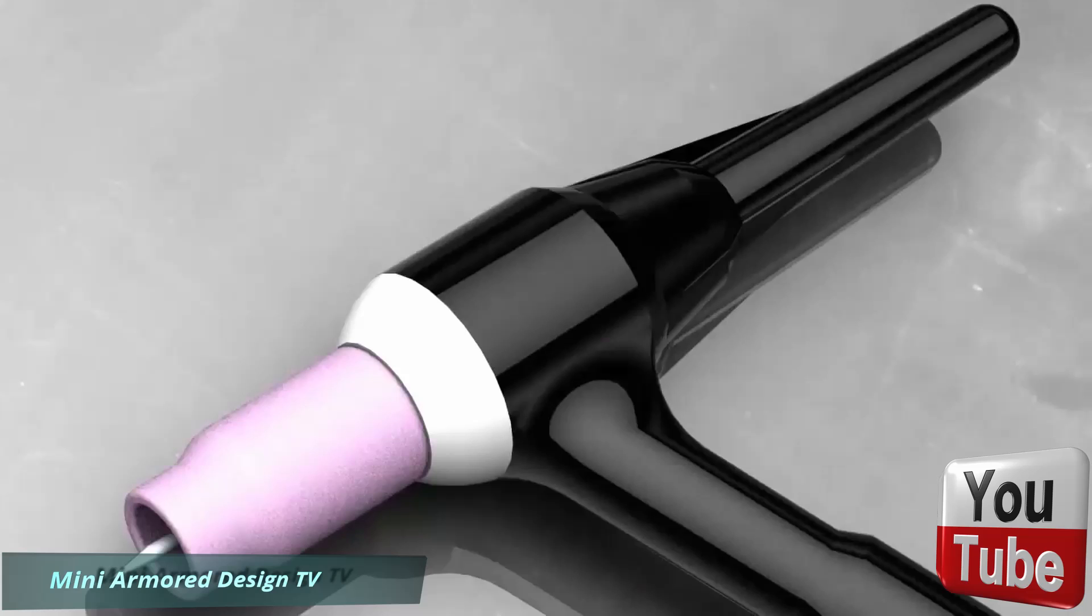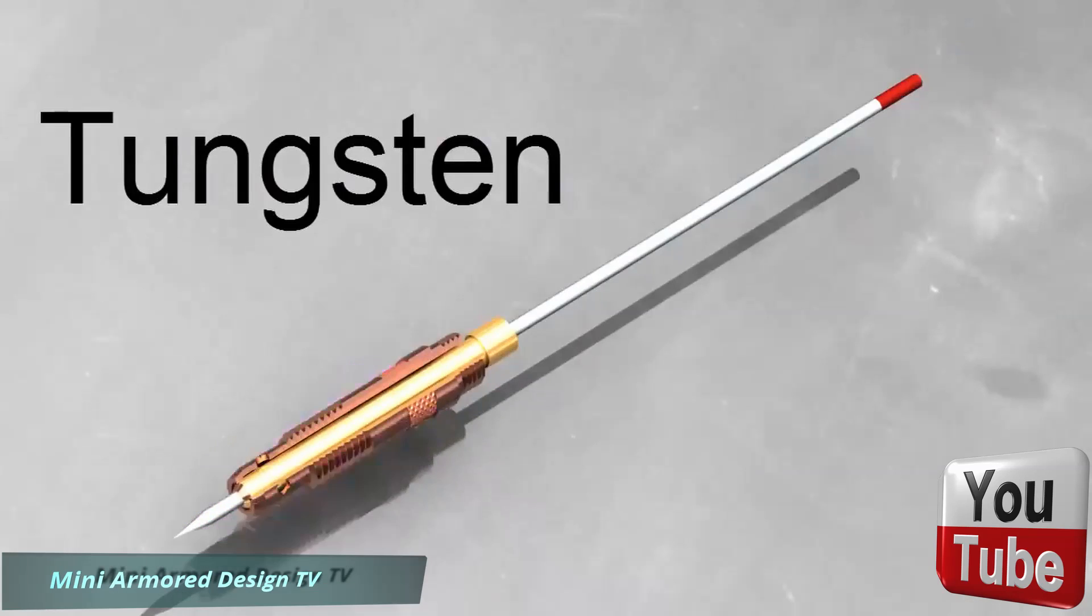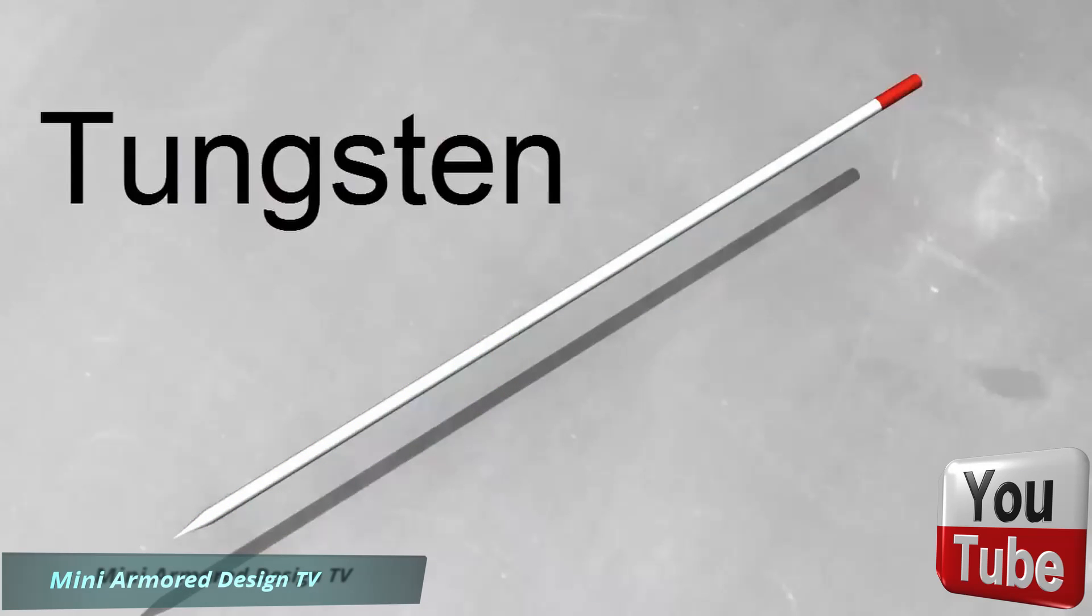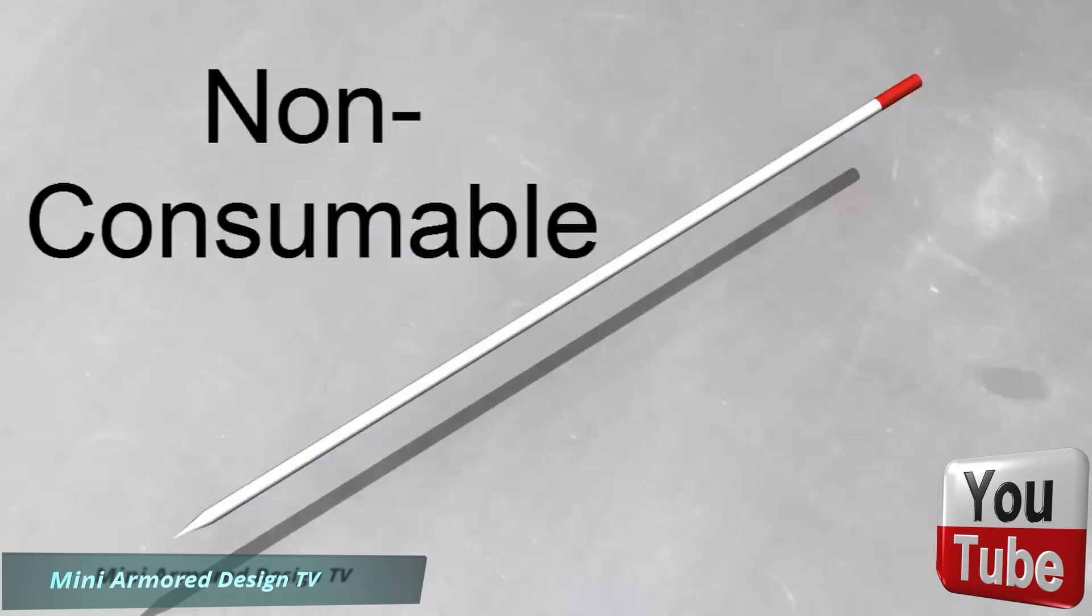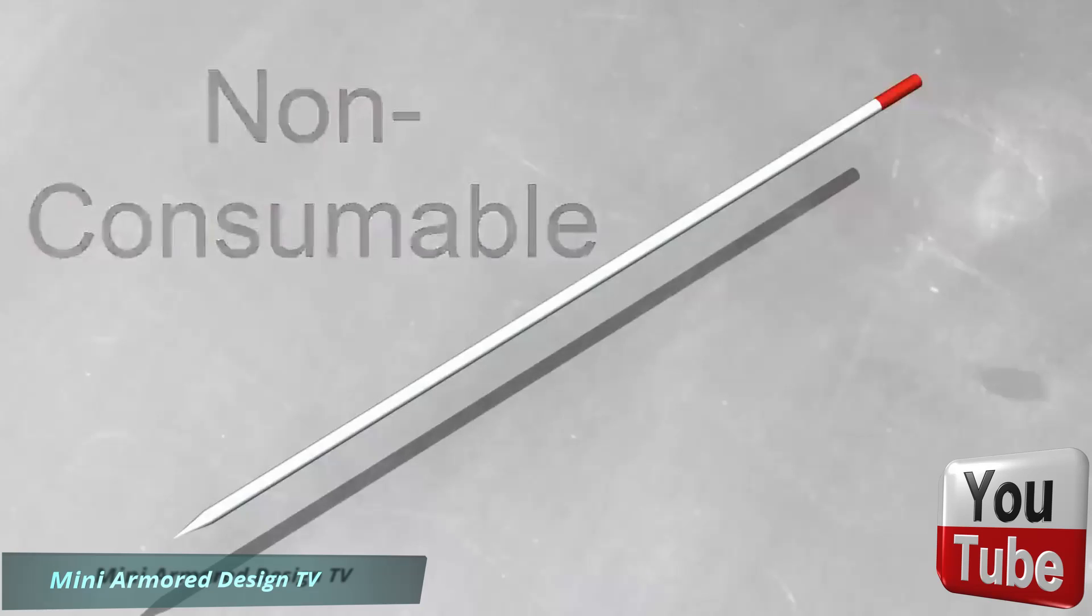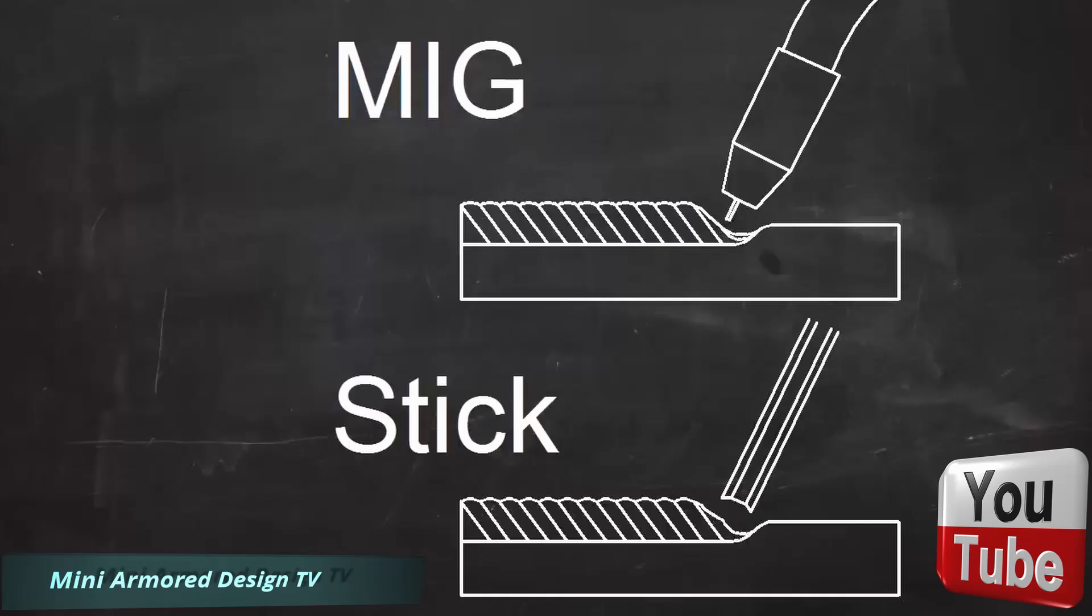TIG welding uses a tungsten electrode. Tungsten has an extremely high melting point. When you TIG weld, the electrode gets hot but it doesn't melt. We say that it's a non-consumable electrode. That doesn't mean it lasts forever, just that it doesn't melt and become part of the weld. In other welding processes, the electrode melts and becomes filler metal. Those are consumable electrode processes.